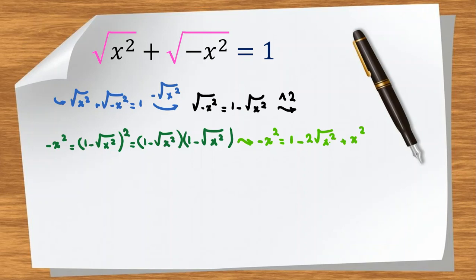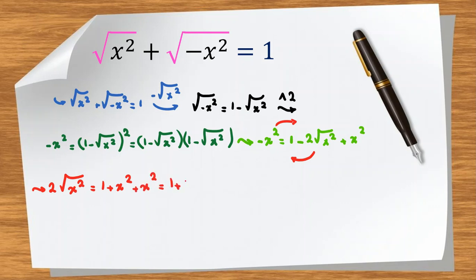Now we rearrange: we take x squared to the left-hand side and the other terms to the right-hand side, with sign changes. We get 2 times square root of x squared equals 1 plus 2x squared, so square root of x squared equals 1 plus 2x squared, which we will square again.